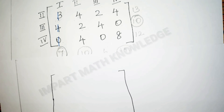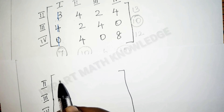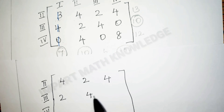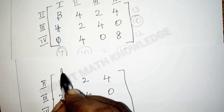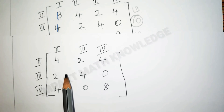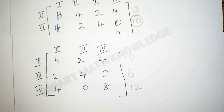Now the reduced matrix contains strategies 2, 3, and 4 for player A. The matrix values are: row 2 — 4, 2, 4; row 3 — 2, 4, 0; row 4 — 4, 0, 8. The row totals are 10, 6, and 12, and similarly the column totals are 10, 6, and 12.